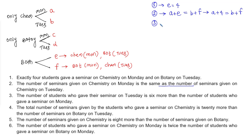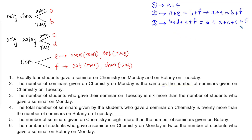Third statement: the number of students who gave seminar on Tuesday is B plus D plus E plus F. This is 6 more than the number who gave seminar on Monday, which is A plus C plus E plus F. Cancelling E plus F from both sides gives B plus D equals 6 plus A plus C.